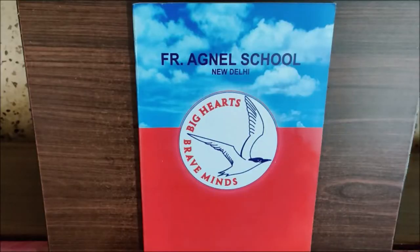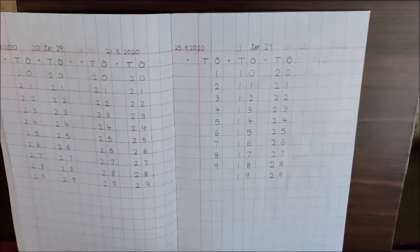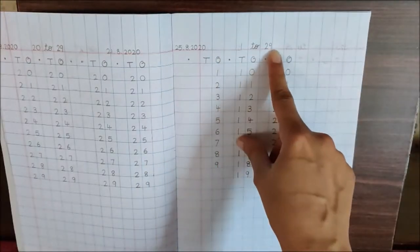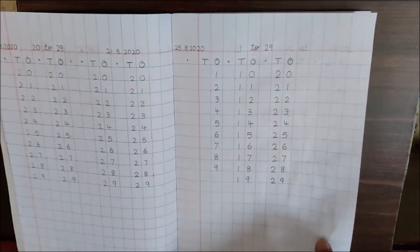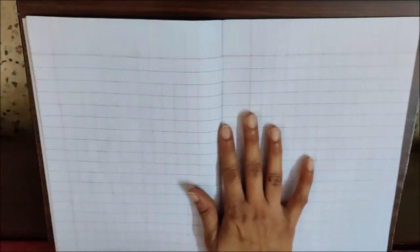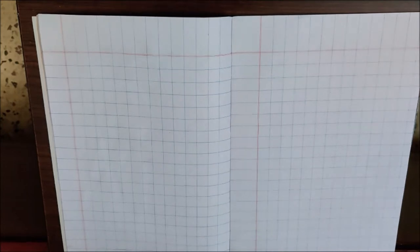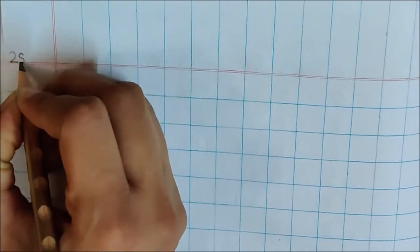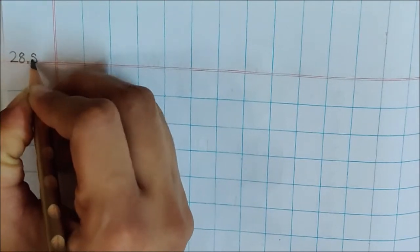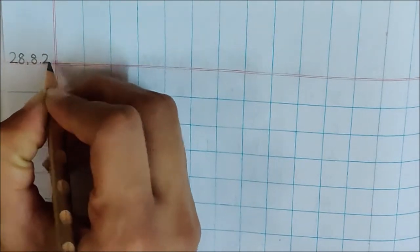We will do work in our maths notebook 1. So open a new page. On Tuesday, we did writing of numbers 1 to 29 on this page. So turn one more page. And this is your new page. So write down today's date. Today is August 28.8.2020.